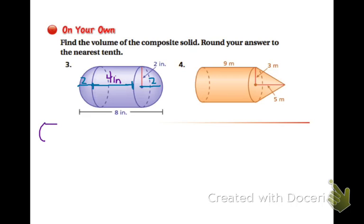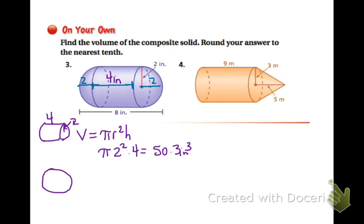So sometimes I like to just kind of draw my shapes so I know, and then label them. Now it shares the same, so it's going to have 2 for the radius there. So for a cylinder, I have π r squared height. So π, and then we have 2 squared times 4, and that equals about 50.3 inches cubed.